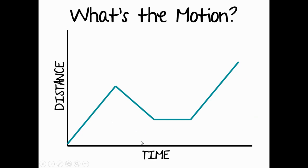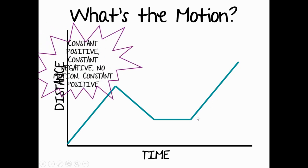For this type of motion we're going to break it down segment by segment. This line segment is moving up the y-axis in a straight line, so this is constant positive motion. Then the object is moving down the y-axis back towards home in a straight line, so this is constant negative motion. This is the flat line, so this is a no motion line. And this last segment is moving up the y-axis again — so this is constant positive.